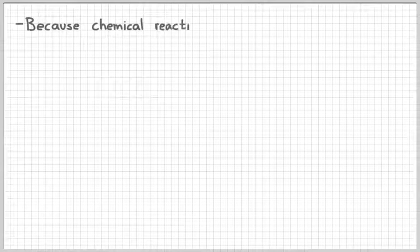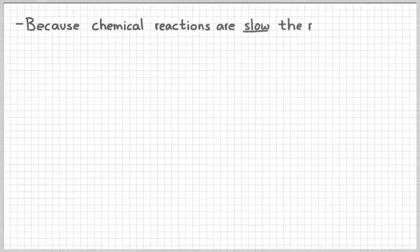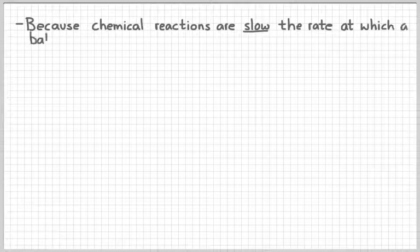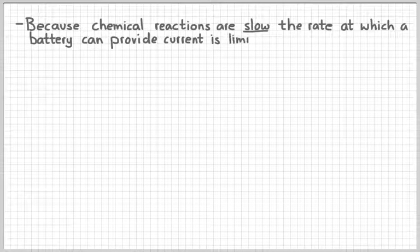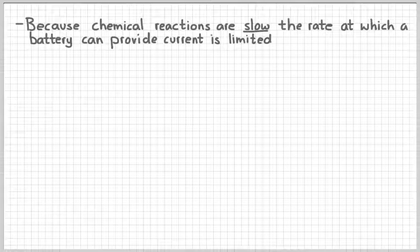Now the thing about chemical reactions is that typically they're slow, especially on the order of, say, an electric charge moving through a circuit. So because chemical reactions are slow, the battery can't provide as much current as we would like it to. The rate at which it can produce current is limited.